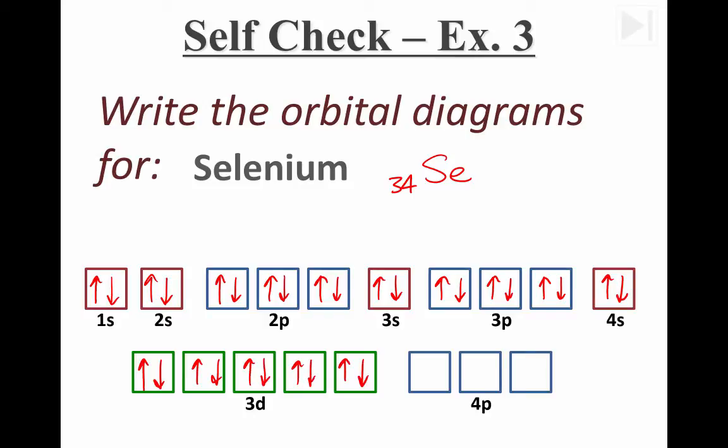Now remember, I'm drawing arrows until there are 34 of them. And if we do a quick count, we can see that so far, looks like we have about 30. So the last four electrons will all fill in the 4p sublevel.